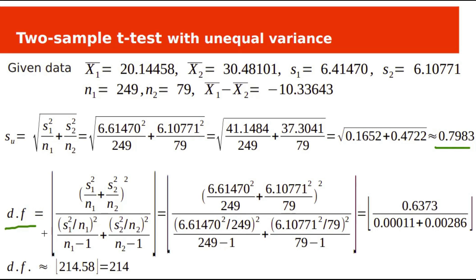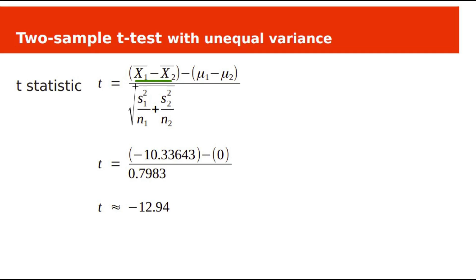The degrees of freedom calculated using the formula gives 214.58; applying the floor function gives 214. Substituting the difference of sample means and standard deviation into the t-statistic formula gives a t-statistic of −12.94.